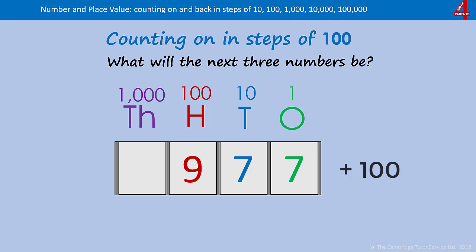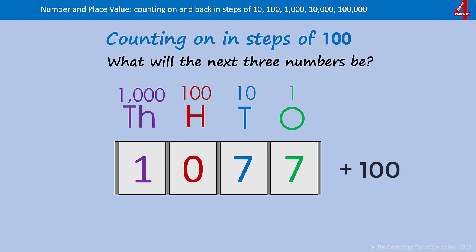The next hundred we add on will need to take that nine digit back to zero, which means we need to add one into the thousands column. Then the next hundred we add on will make that one thousand, one hundred and seventy-seven.